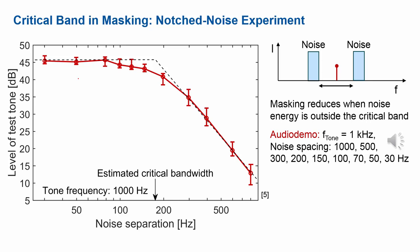For this notched noise experiment I also brought a demonstration. We keep a tone of one kilohertz at a fixed level, and we have two noises of 200 hertz bandwidth, and we vary the noise spacing. When the noise is very narrow to the tone, it will mask that tone. If the noise energy falls outside the critical band, it will not mask the tone, so you can hear the tone. We're not varying the tone level as plotted in the graph, but just changing the spacing — you will not hear the tone when the noise energy masks it, and you will hear the tone when the noise energy falls outside the critical band.